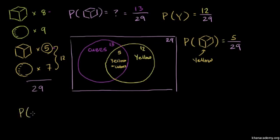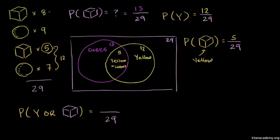The next two are very interesting probability cases. The probability of getting yellow or a cube: the total number of possibilities is still 29. The number of yellow objects equals 12.